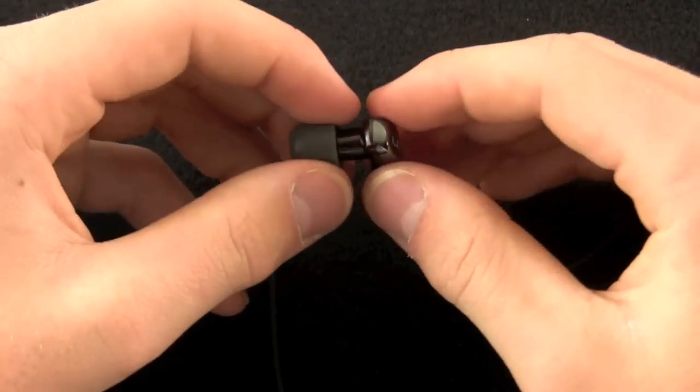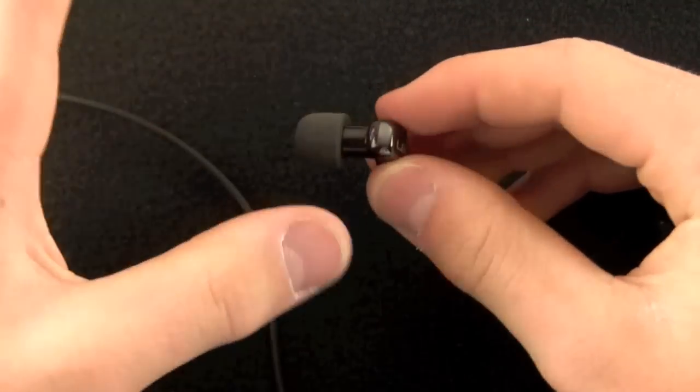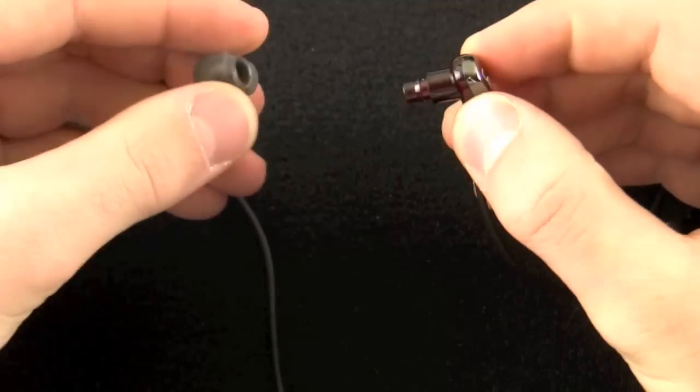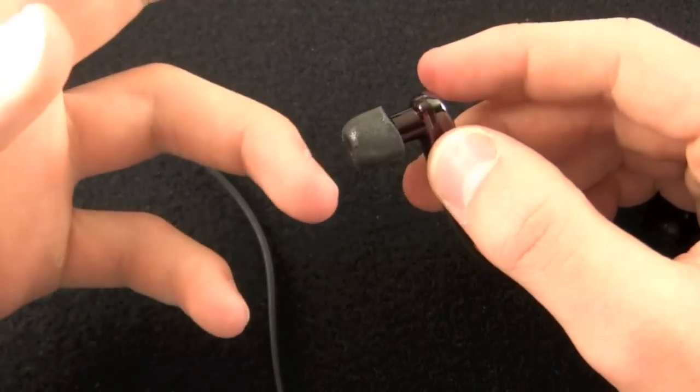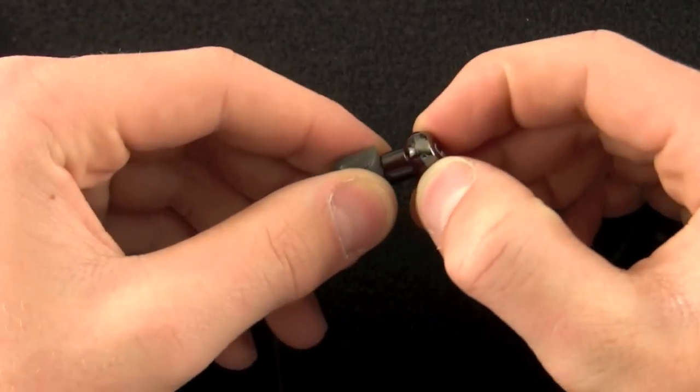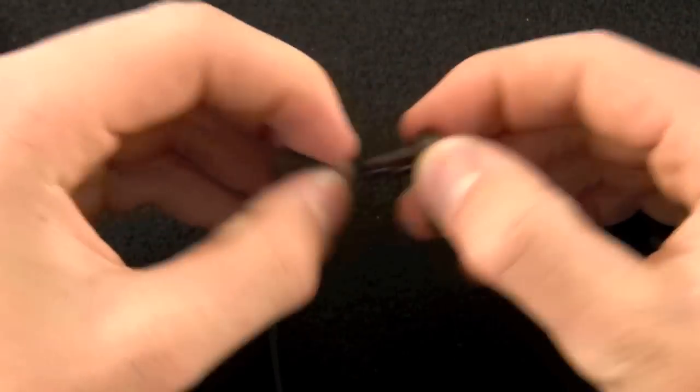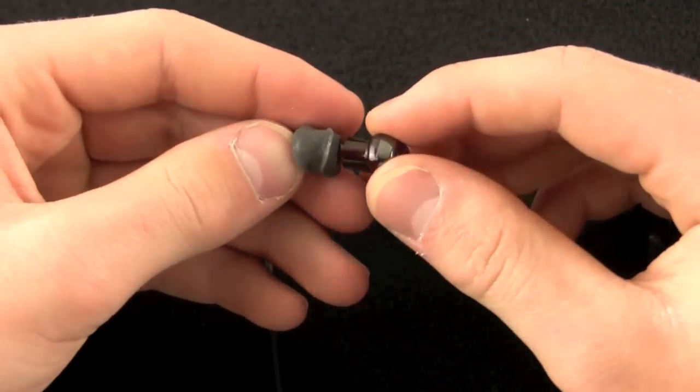The ear tips come off way too easily once you've used the headphones for about a month or so. This happens with the foam ones and the silicone ones. Honestly, probably one out of four times I'm listening to these, I yank them right out of my ear and the headphone, this is a bad example, I'm grabbing too hard,